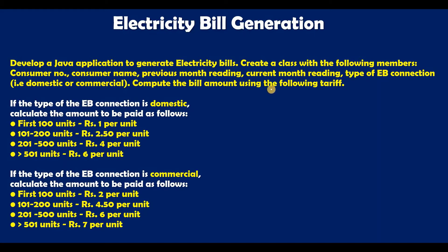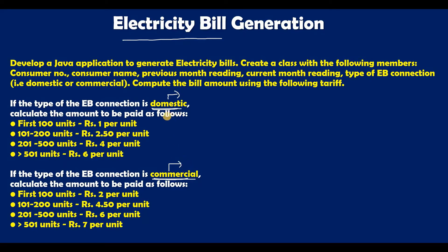Hello everyone. In this video we are going to learn how to write a Java program for generation of electricity bill. First of all, you should know that there are two types of electricity bill connections: domestic type and commercial type. Domestic types are used for houses and commercial types are used for businesses. The charges for domestic purposes are low compared to commercial, and we have different sets of formulas for each.